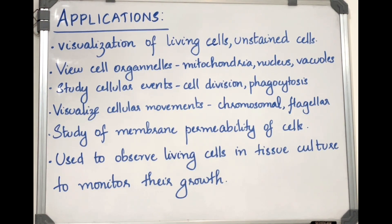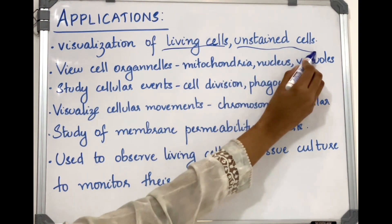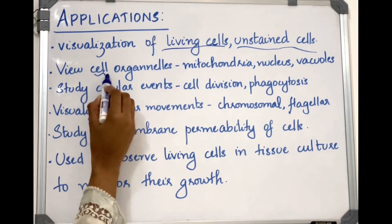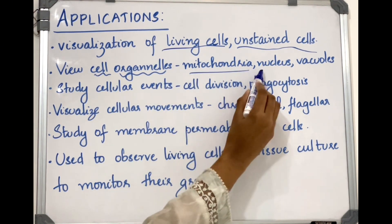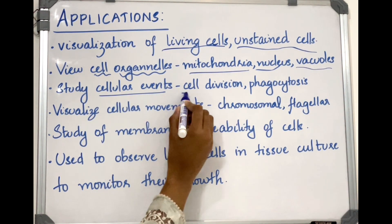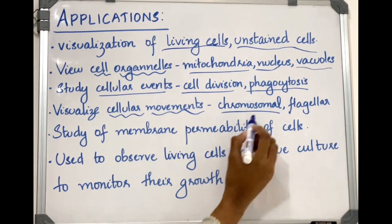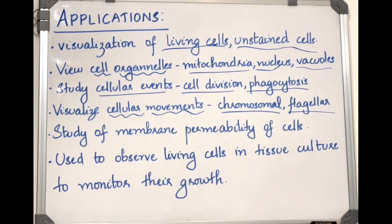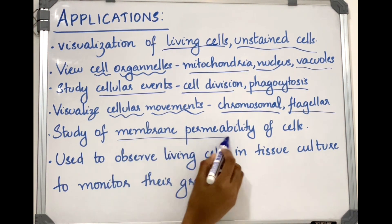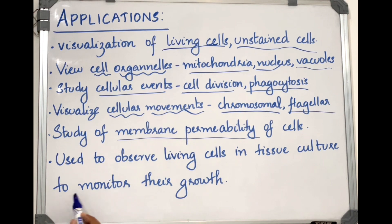Applications of the phase contrast microscope: it is used to visualize living and unstained cells, and to view cell organelles such as mitochondria, nucleus, and vacuoles. It is used to study cellular events such as cell division and phagocytosis, and to visualize cellular movements such as chromosomal movement and flagellar movement. It also enables study of membrane permeability and is used to observe living cells in tissue culture to monitor their growth.